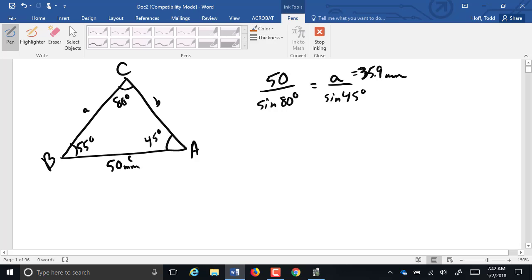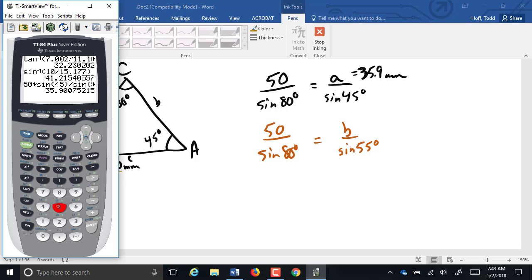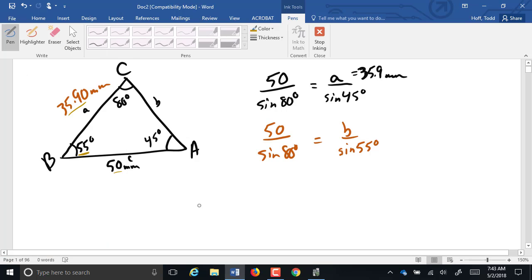A is 35.9. B is going to be found using the exact same approach, only now it's B over sine of 55. Before we calculate, where do we expect that value to land? Yes, 55 is the middle angle in size, so it's got to be between 35.9 and 50. We get 41.59.